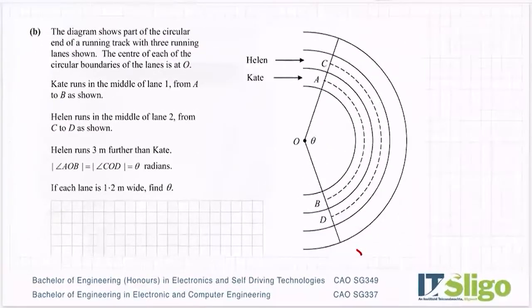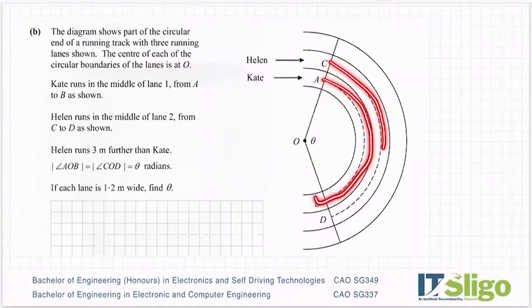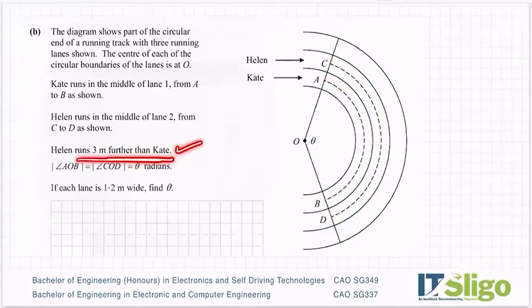Part b of that question then was the running track. The diagram shows part of the circular end of a running track with three running lanes as shown. Here, here and here. The centre of each of the circular boundaries of the lanes is at O. Kate runs in the middle of lane one from A to B as shown. Helen runs in the middle of lane two from C to D as shown. And you know that as you move further out a running track you end up running further. You have a bigger arc to run around. Helen runs three metres further than Kate, simply because she's on a much wider circle. The angle AOB is equal to the angle COD, which is equal to theta radians. If each lane is 1.2 metres wide, find theta.